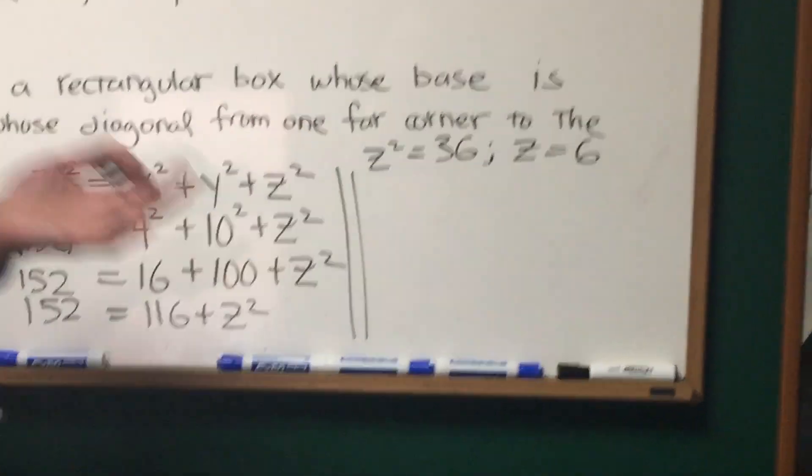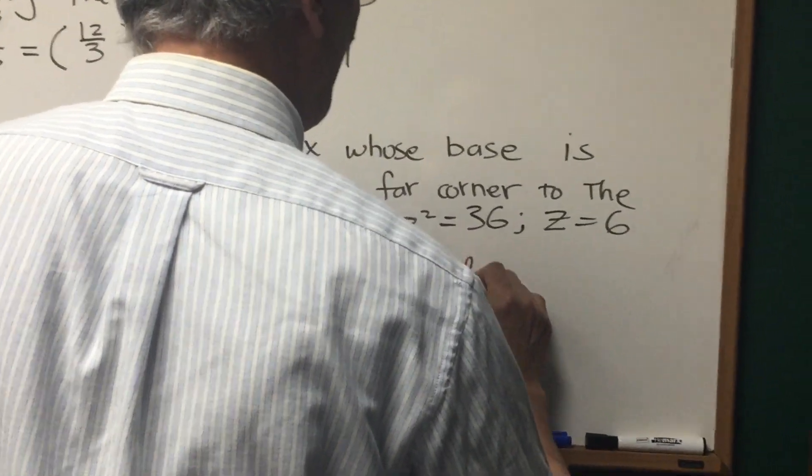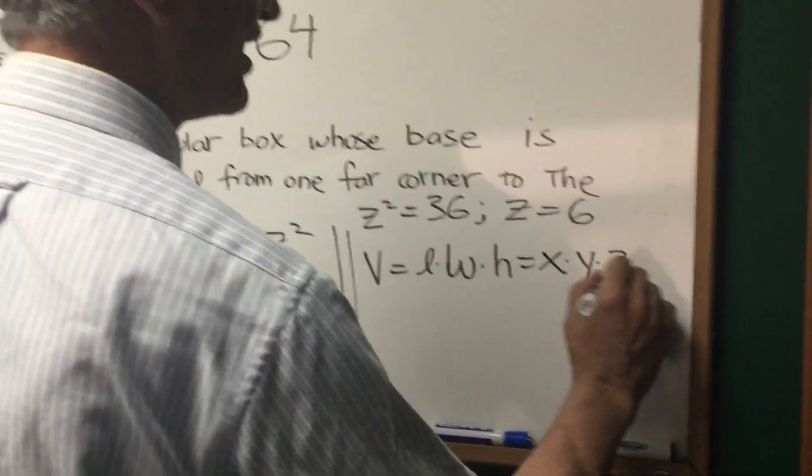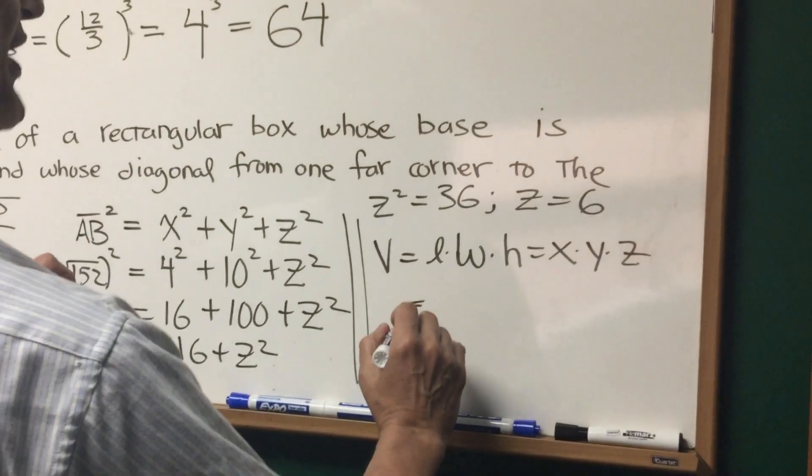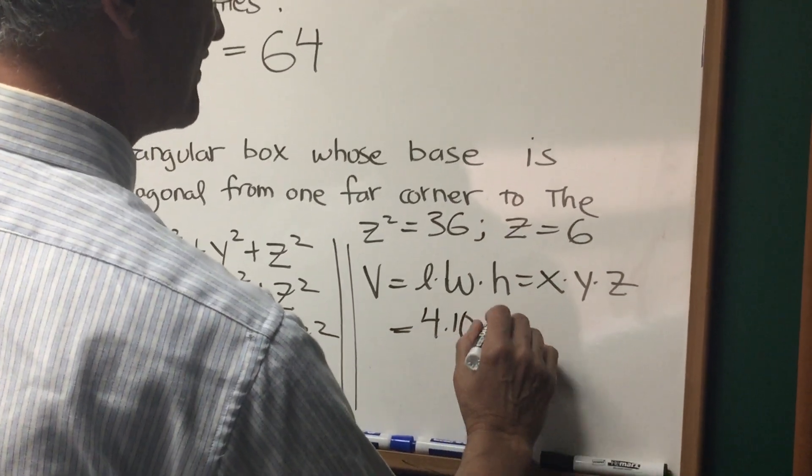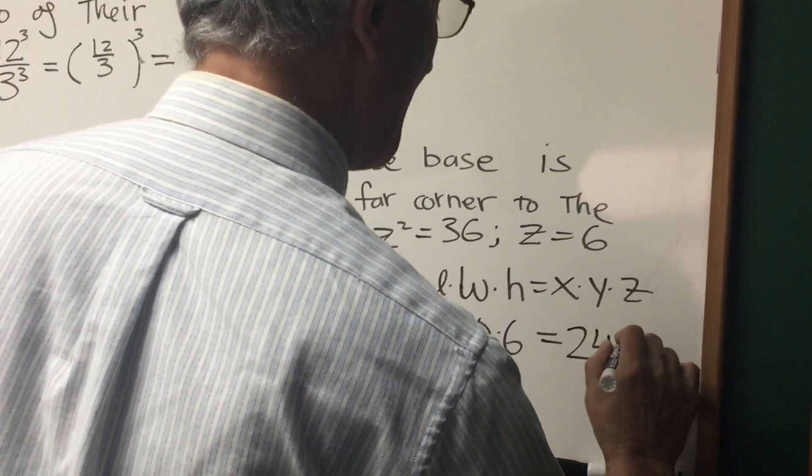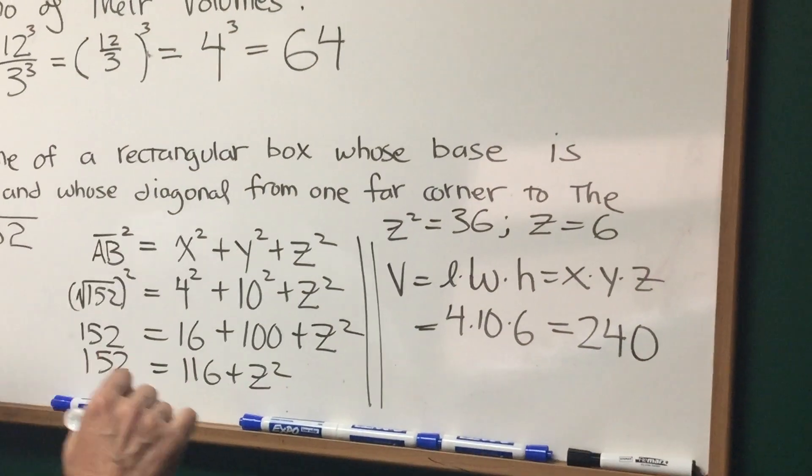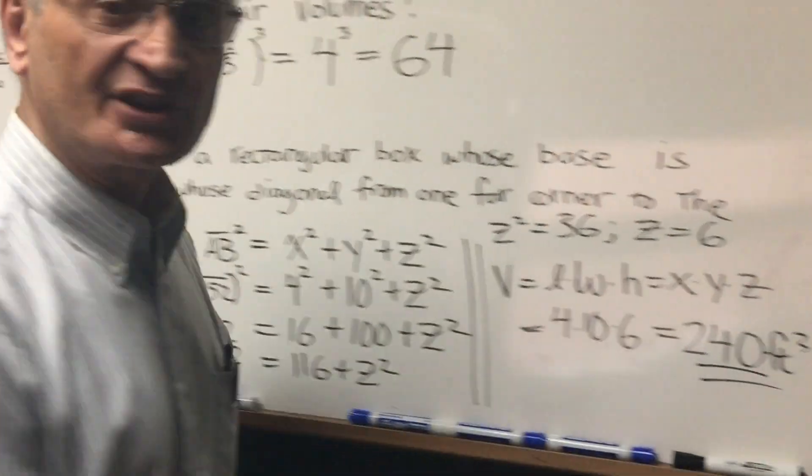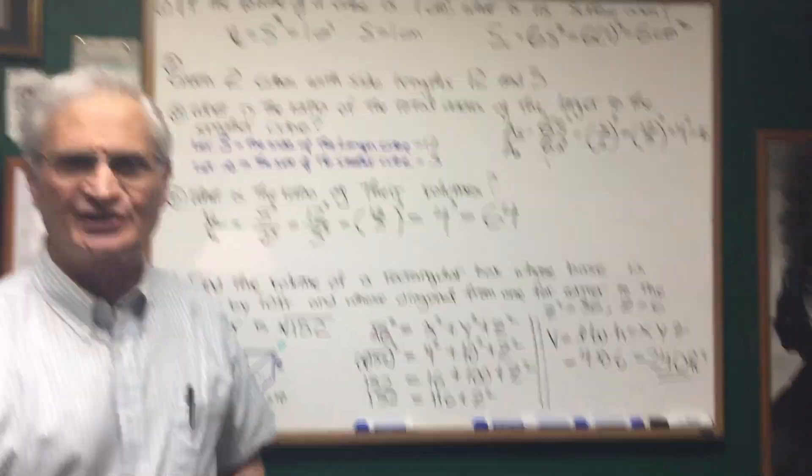Well, that's all we need. The volume of this rectangular box is going to be length times width times height, which is x times y times z, which is then going to be equal to 4 times 10 times 6. So that's 40 times 6, that's 240. And what are the units? Feet. So it's feet cubed. And there's our answer. And there's the extension of the Pythagorean theorem to three dimensions in use.